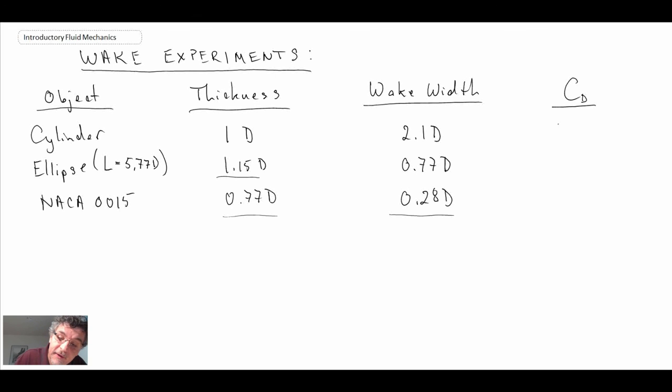We've already seen the cylinder has a drag coefficient of 1.2. For the ellipse that we looked at has a length to thickness ratio of 5. Experimentally, those have been determined to be 0.25 for the drag coefficient—significantly less than what we saw with the cylinder.